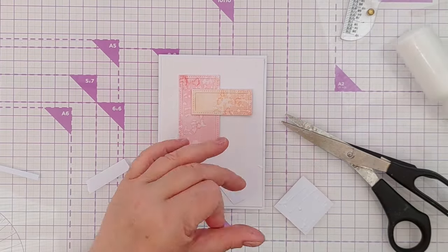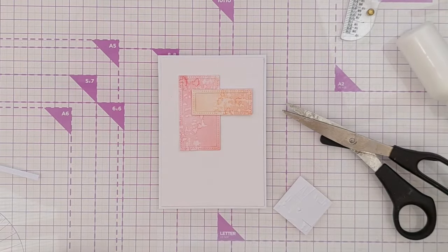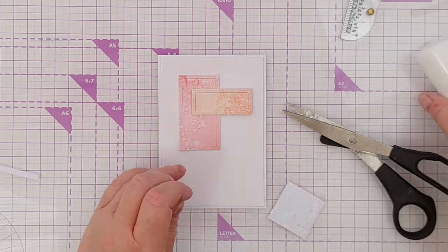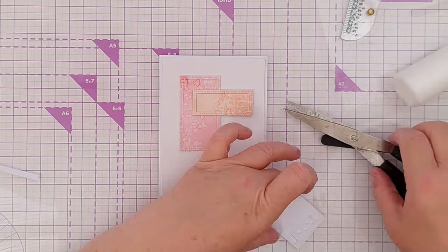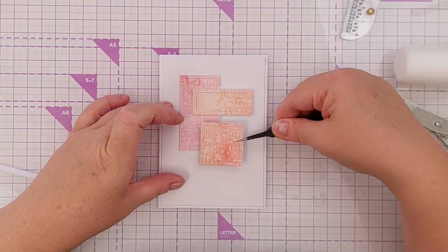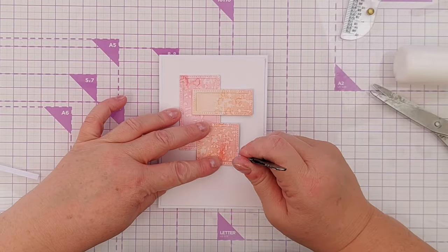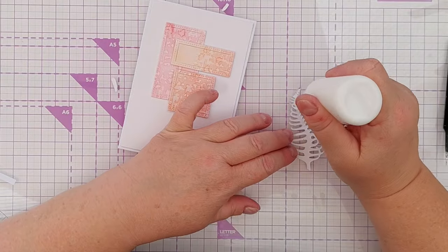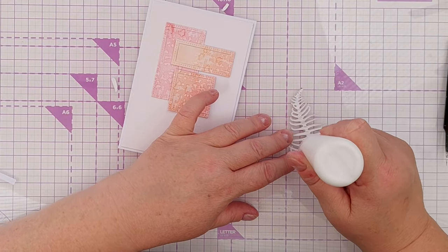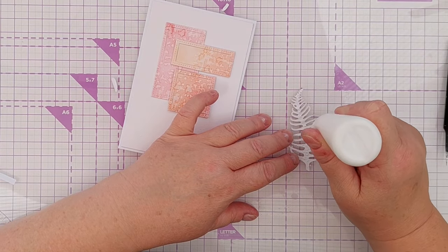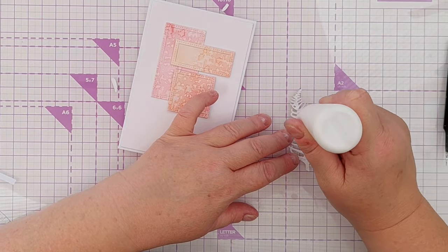For my focal image I chose a fern die to create a copper glitter cardstock fern die cut. I glued that onto my little cluster of shapes over towards the left hand side so it's slightly offset and I think that works with the way that the die cut kind of curves. It looks nice set off to the side like that.